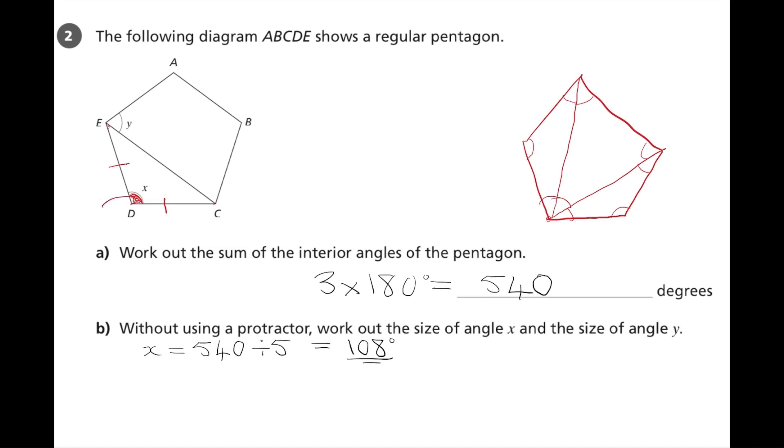We know x is 108. We just worked that out. The other two angles inside that triangle are equal to each other. Let's call them m.